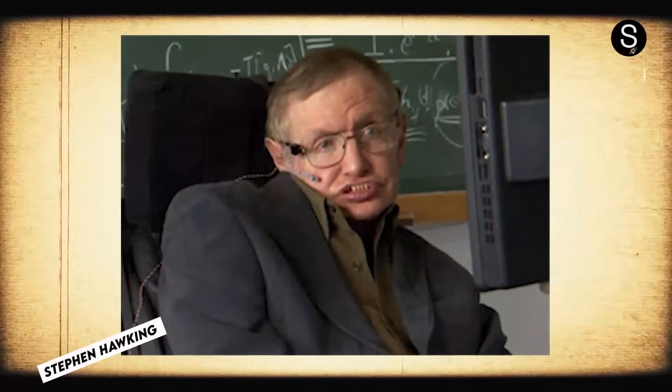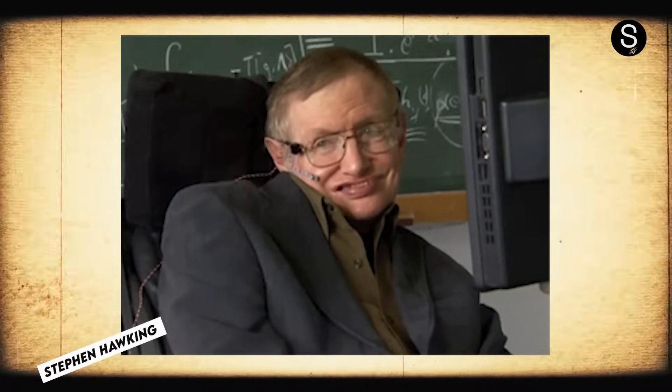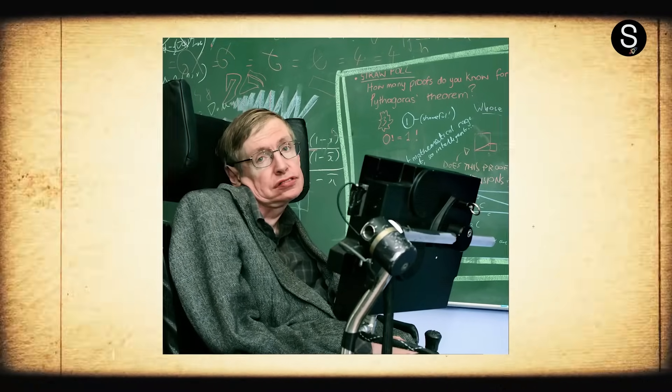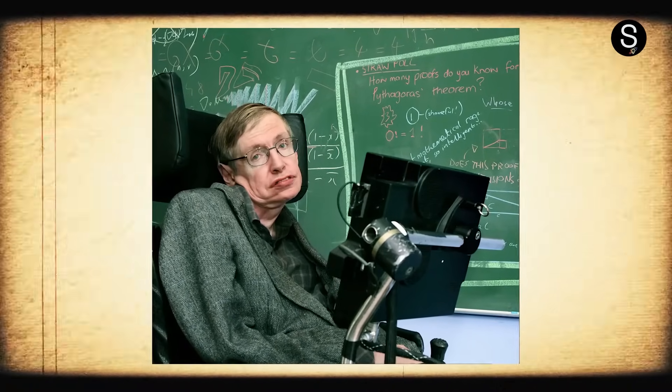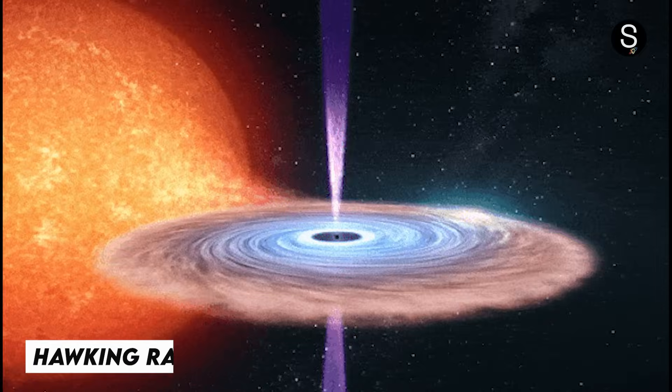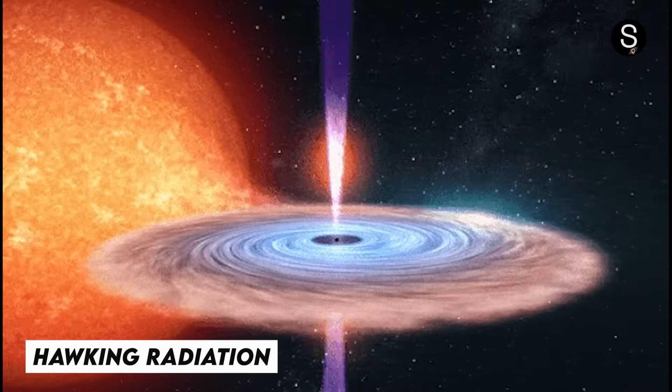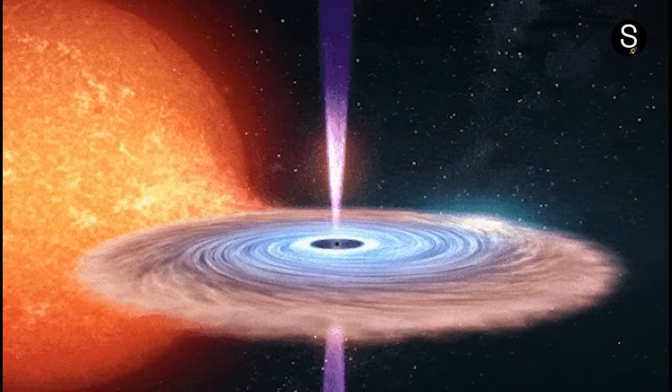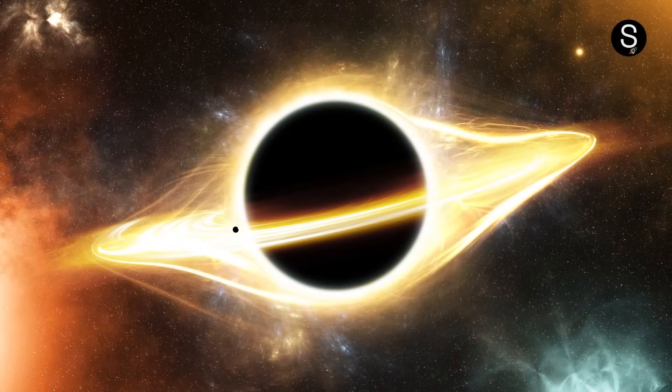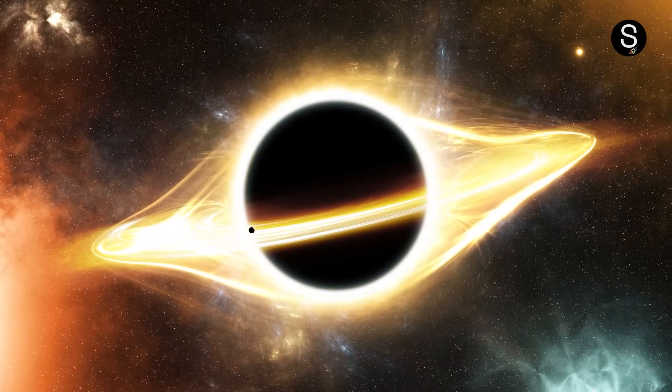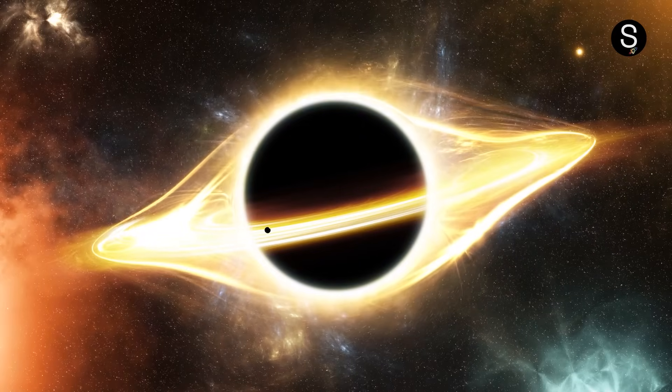Stephen Hawking was making groundbreaking findings about black holes at the same time. In 1974, he proposed that black holes may produce radiation, commonly known as Hawking radiation, due to quantum processes near their event horizon. This discovery called our knowledge of black holes and their behavior into question, hinting that they could gradually disappear over time.